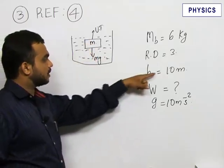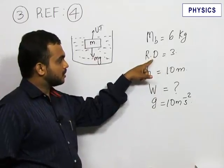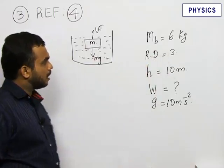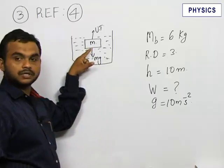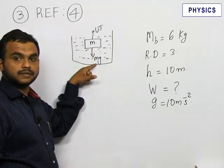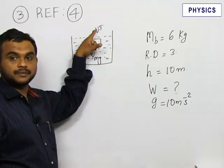The depth of the lake is given as 10 meters. The relative density is given as 3. We know that there are two forces acting on this brick in water: one is weight acting downward and the upthrust acting upward.